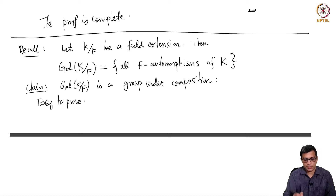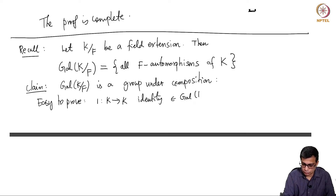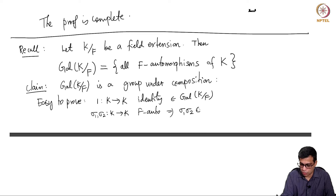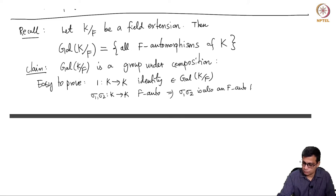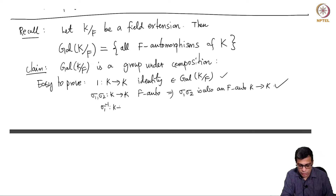Let me say a couple of lines about this without giving a rigorous proof. I am taking all F-automorphisms. The identity is certainly an F-automorphism, and if σ₁ and σ₂ are F-automorphisms, it is a triviality to check that their composition is also an F-automorphism. You have inverses because by definition an automorphism has an inverse, and σ₁⁻¹ is an F-automorphism.